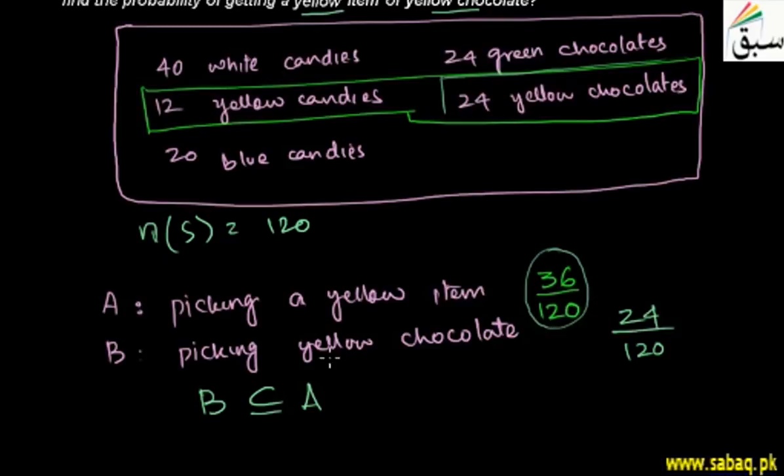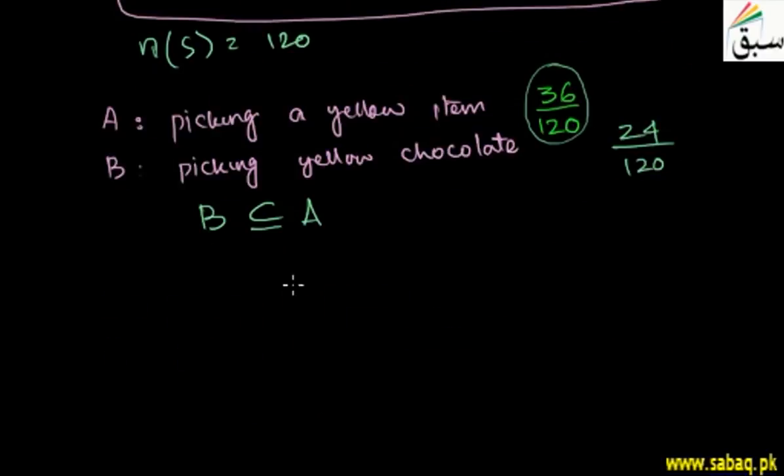When event B is a subset of event A, the probability of event A already includes event B because B is a subset of A. So in this case, if we look at the definition, probability of event A or B...